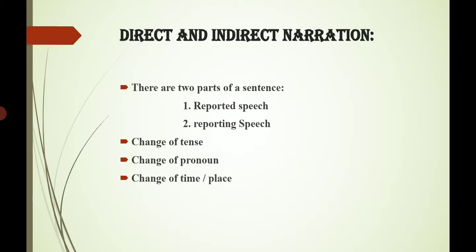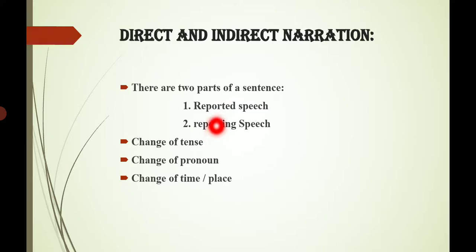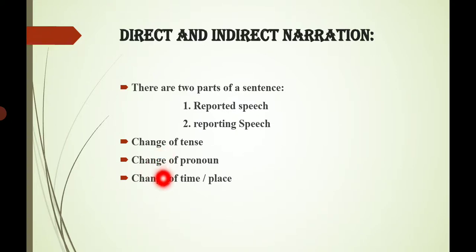As you all know, we had done direct and indirect narration of assertive sentences in our physical classes. So in this video lecture, I will revise the whole concepts again, and in the next lecture I will explain narration of interrogative sentences. There are two parts of a sentence in narration: number one is reported speech and number two is reporting speech. Reporting speech is the part outside the inverted commas, and reported speech is the part inside the inverted commas. There are three changes we do when changing a direct sentence into an indirect sentence: number one is change of tense, number two is change of pronoun, and number three is change of time and place.